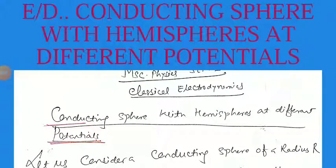Very good morning to everybody. Today we will discuss an important topic related to the conducting sphere — specifically, a conducting sphere with hemispheres at different potentials. This topic belongs to classical electrodynamics related with the MSc Physics semester course.